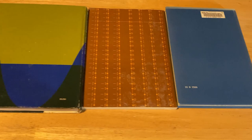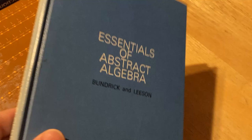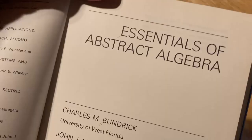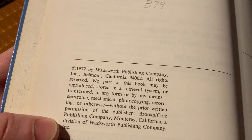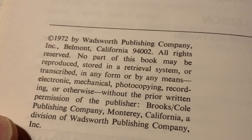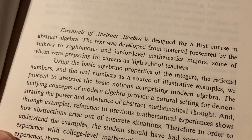And this last book is far more advanced than these three. This one is called Essentials of Abstract Algebra by Bundrick and Leeson. And again, I could not find another edition of this book on the internet. Essentials of Abstract Algebra, Charles M. Bundrick, University of West Florida, John J. Leeson, University of North Florida. Copyright 1972 by Wadsworth Publishing Company, Inc., Belmont, California. I believe that this is the only edition out there. It was never reprinted, which I think is really strange because this is a pretty good book.